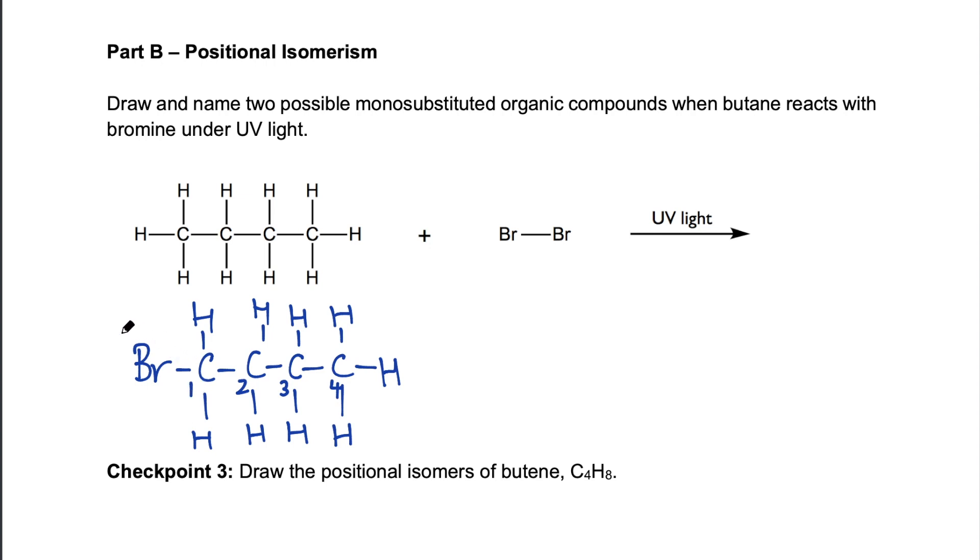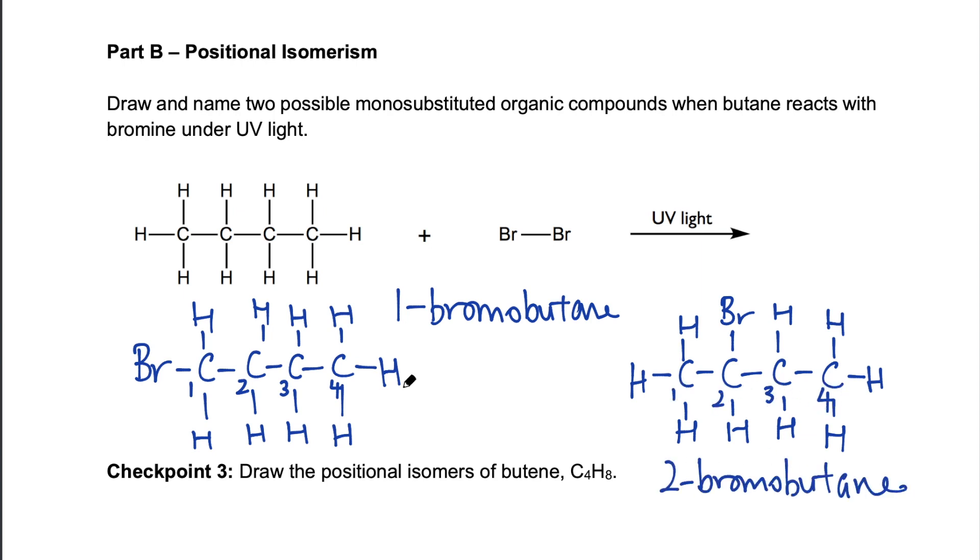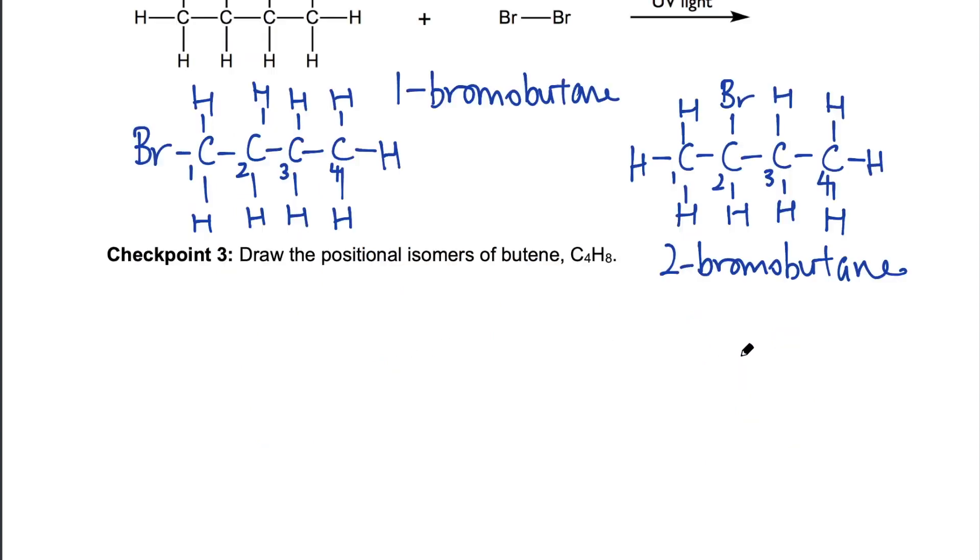So we always number the carbons one to four, always choosing the substituent on the smaller numbered carbon. So the name of this molecule would be called 1-bromobutane. We could also replace the hydrogens in the middle, and this will give me yet another isomer. And as you might have guessed, this will be called 2-bromobutane. They are isomers because they have the same molecular formula, but different structural formula. It is not possible to get this just by rotating the bonds. You need to break some bonds.